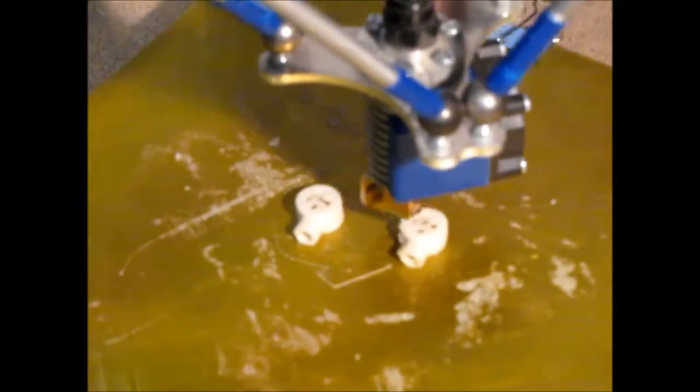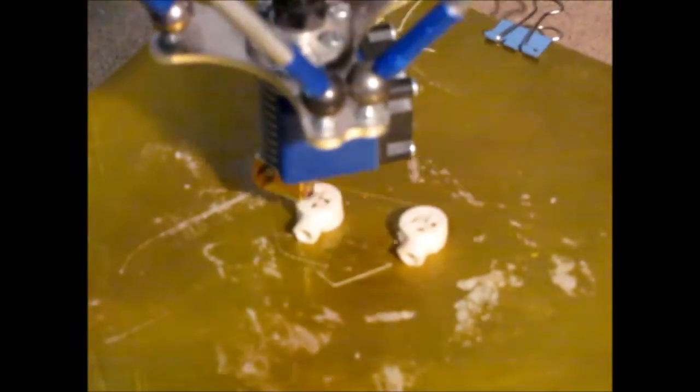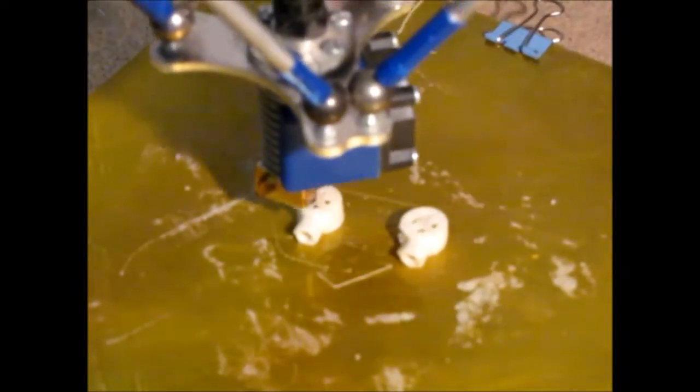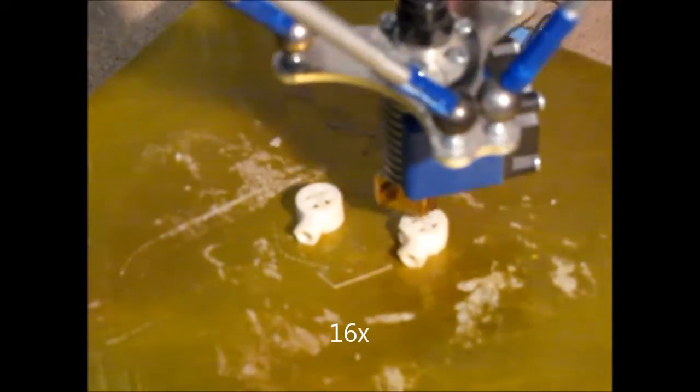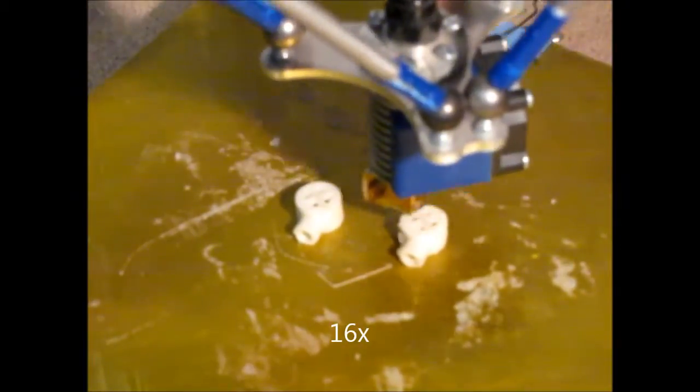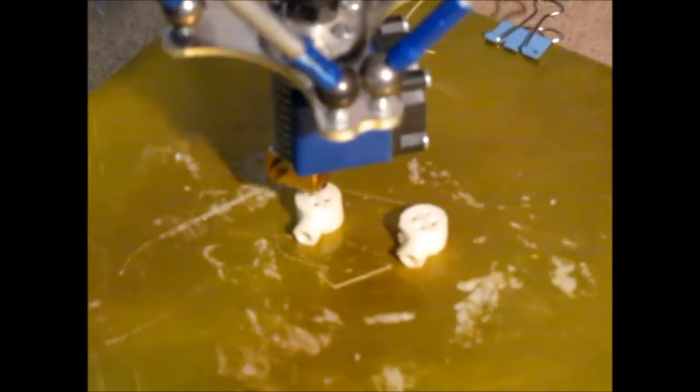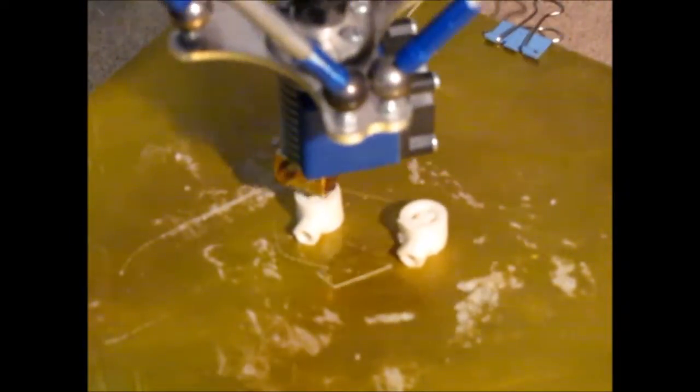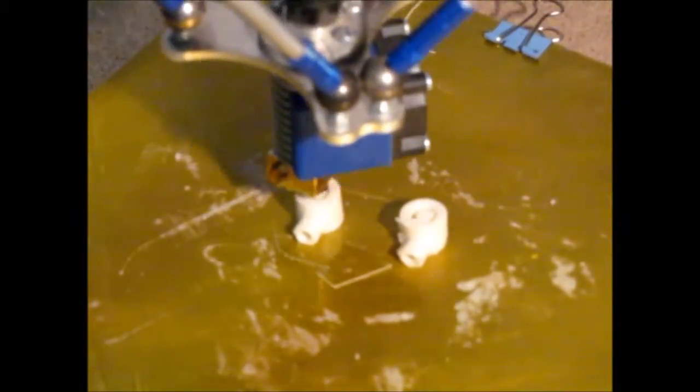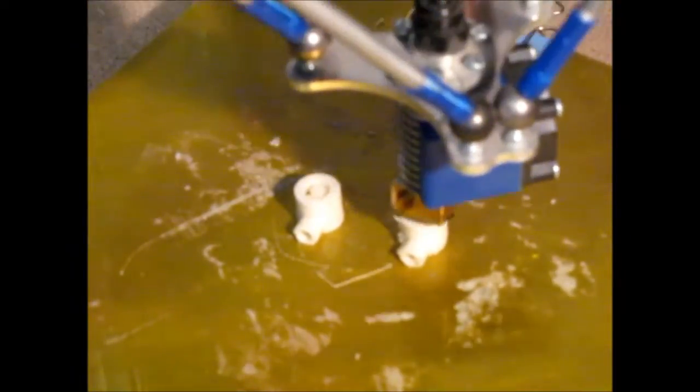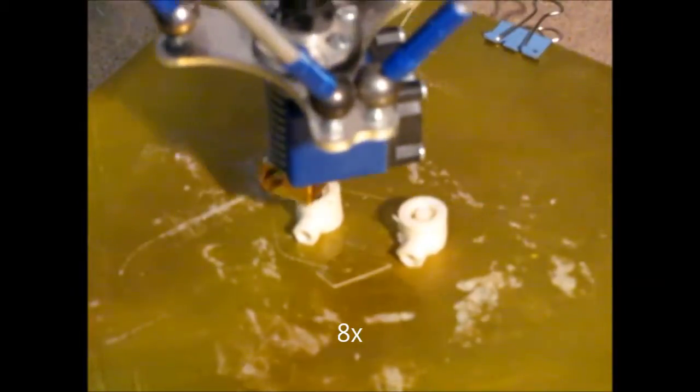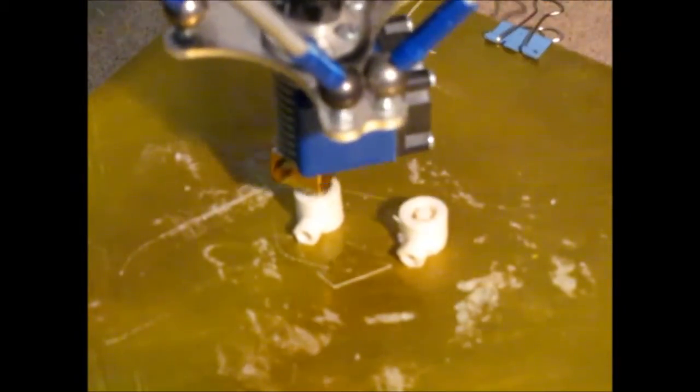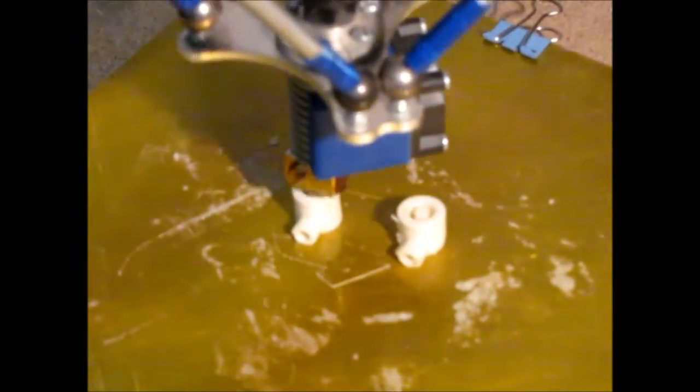There you can see that it's now starting to close off the dome. And then there's quite a few layers of simply building up that structure. There you can see the little pin being printed now. That actually presses the corresponding pin in the Schrader valve.